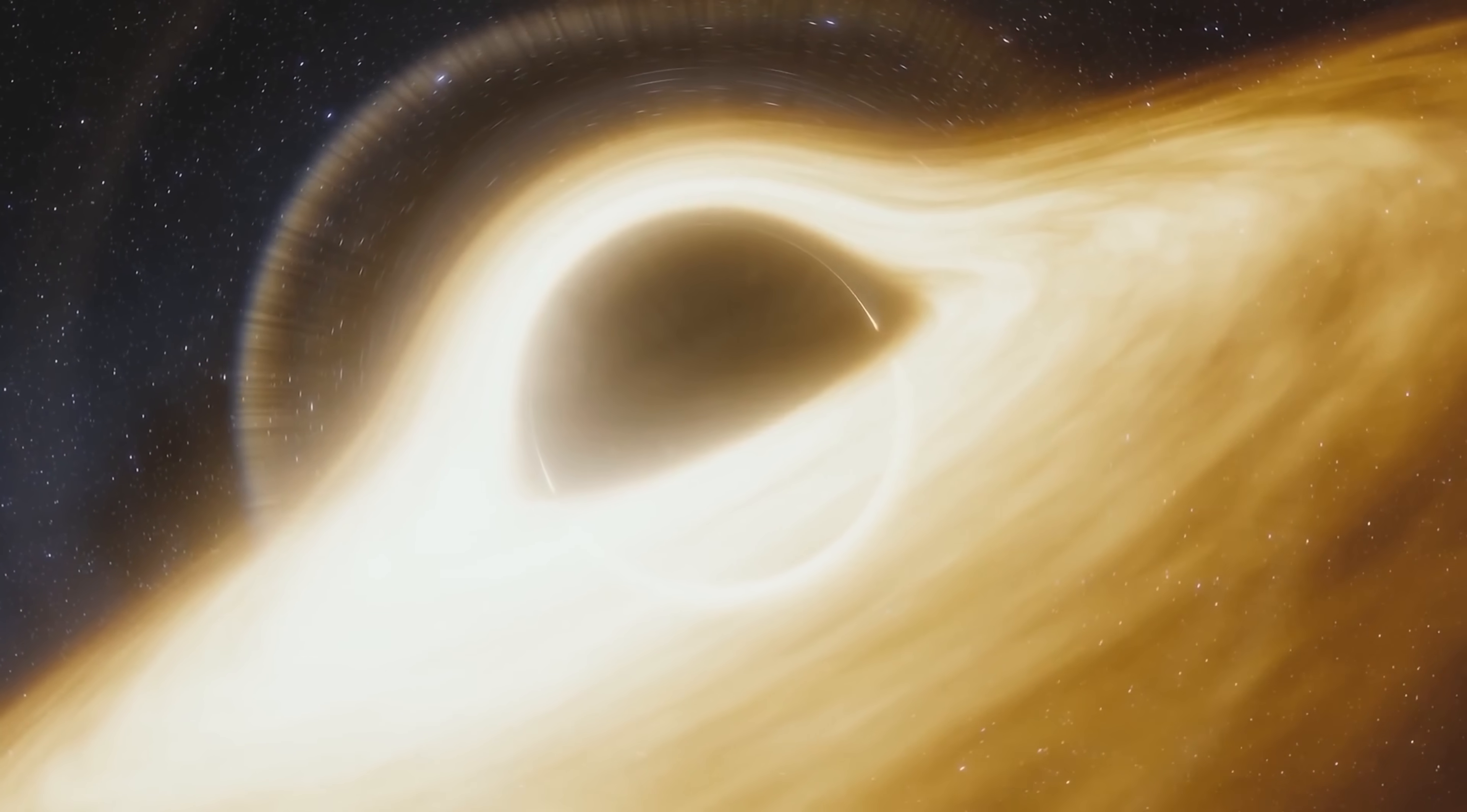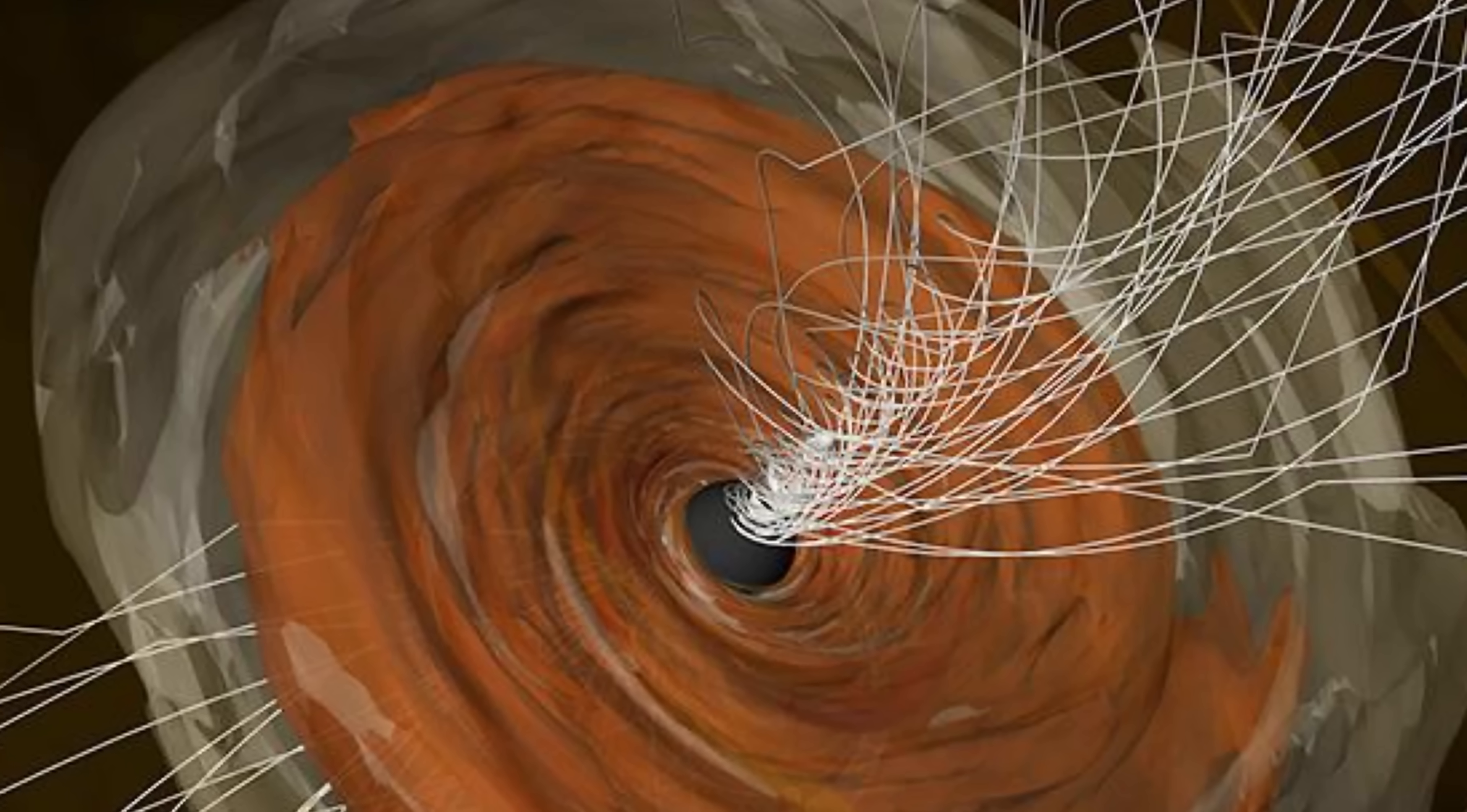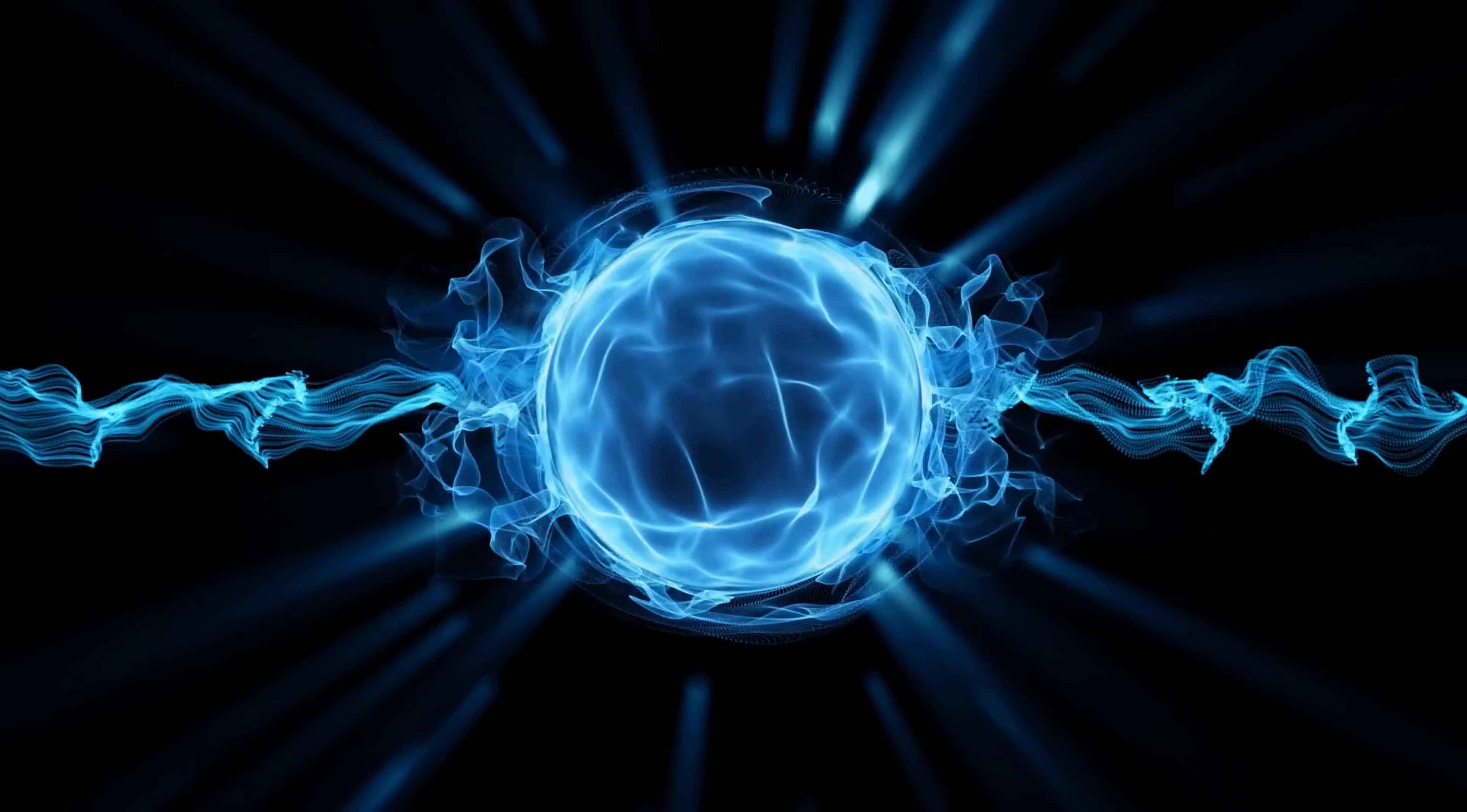Specifically, as the accretion disk forms around the black hole, it seems to produce what scientists refer to as a magnetically arrested disk. In essence, the magnetic field lines inside the disk become extremely intertwined and twisted because of the rotation, preventing the magnetic energy from being released.